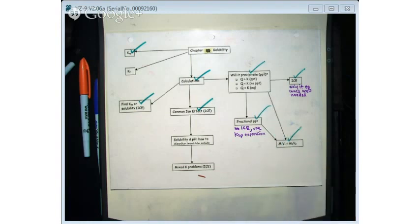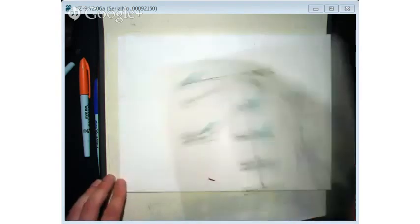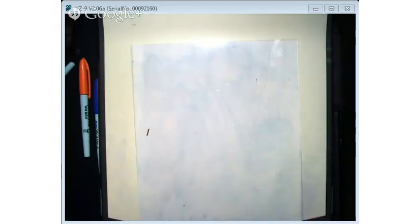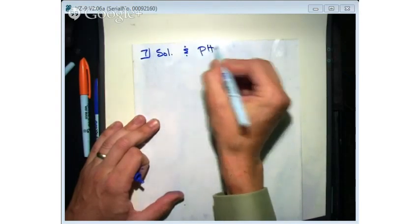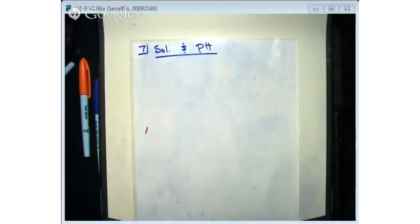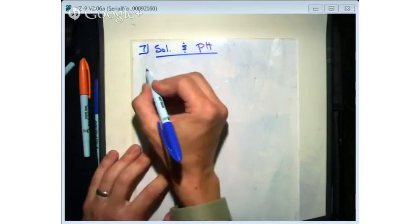We're going on to solubility right now. This is section seven, solubility and pH, page 105 of the reader. If you have the textbook, that's page 748.